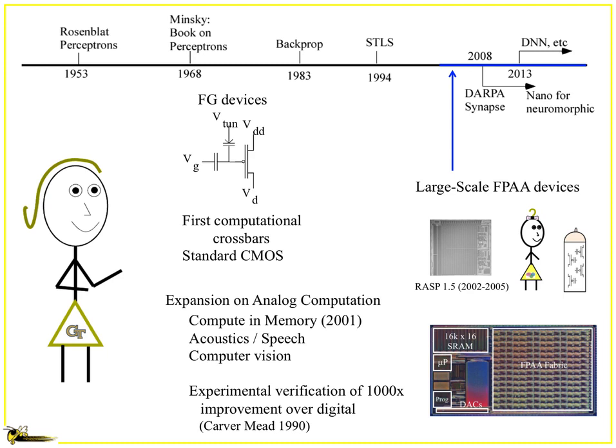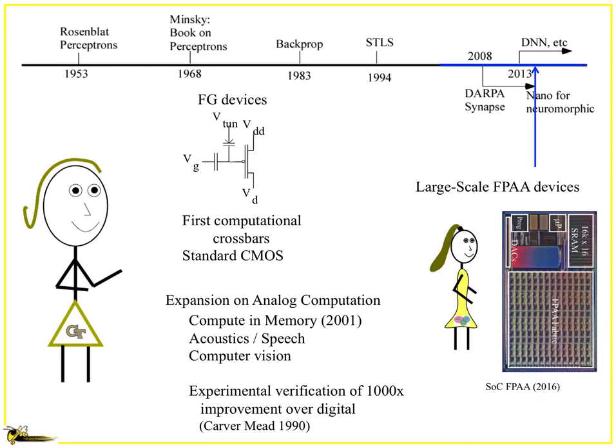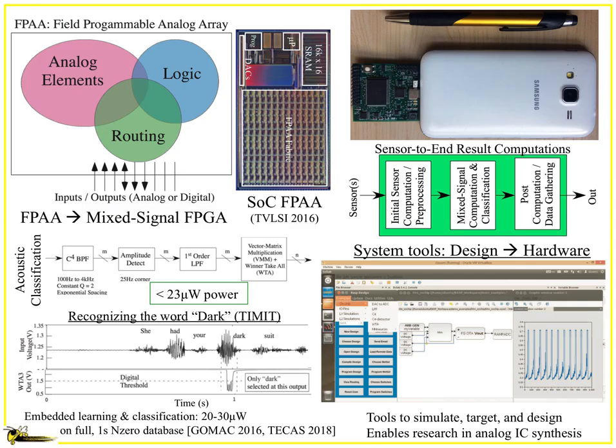You actually had experimental verification of a 1,000x improvement over digital, and that turned out to be amazing. Eventually you started getting FPA devices, and they started kind of small — really cute. But you kept working with the floating gates and other non-volatile structures that grew up, and eventually you get to the system-level discussions you see today. It's pretty impressive what's possible.